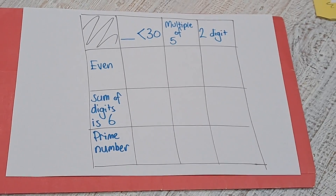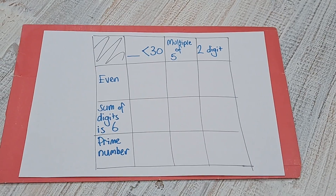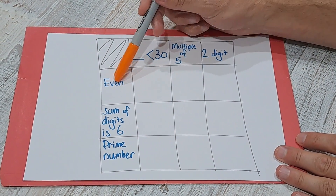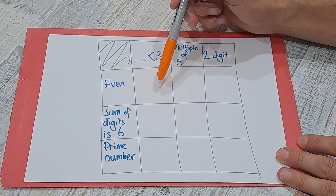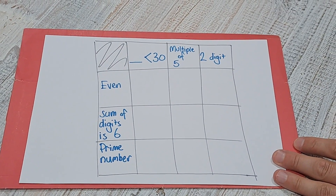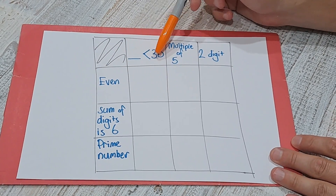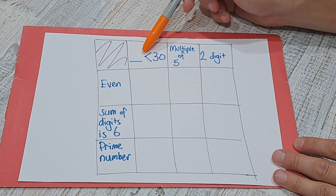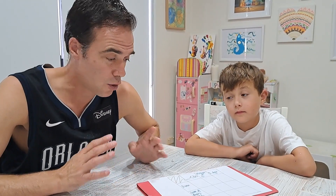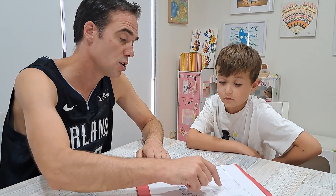Every box has got two clues to fill in. So Isaiah, for example — this box has got two clues. Can you tell us a number that could go in this box? Twenty. And so 20 is an even number — yes — and 20 is less than 30 — yes. Isaiah asks if he can use the same number twice. Each of these nine numbers needs to be different; you need to come up with nine different numbers.